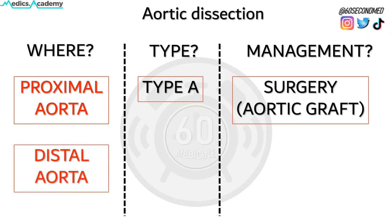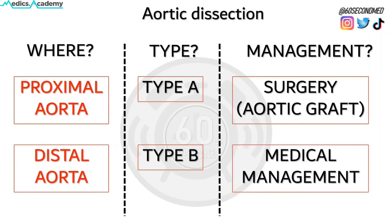If it occurs in the distal aorta, this is termed a type B aortic dissection, and this is managed medically by controlling the blood pressure, usually with medications such as beta blockers.